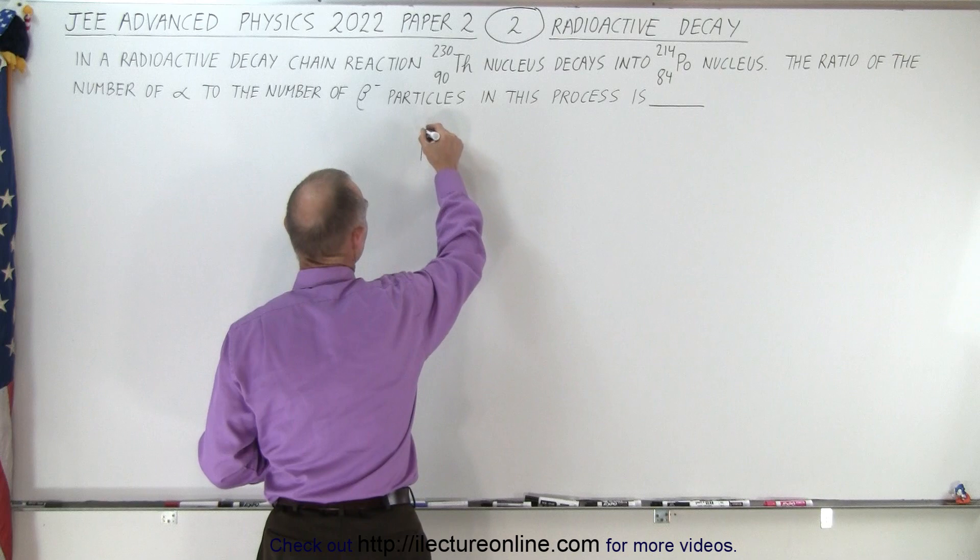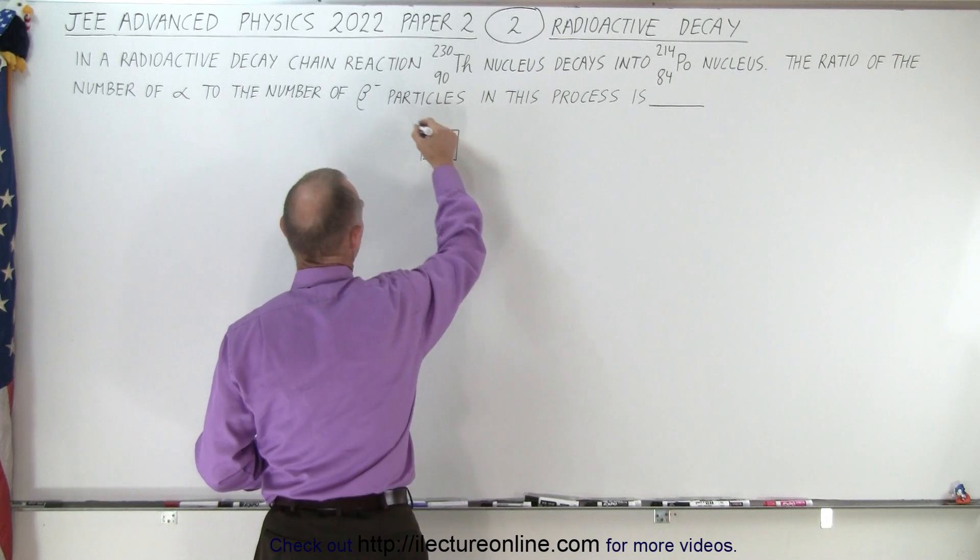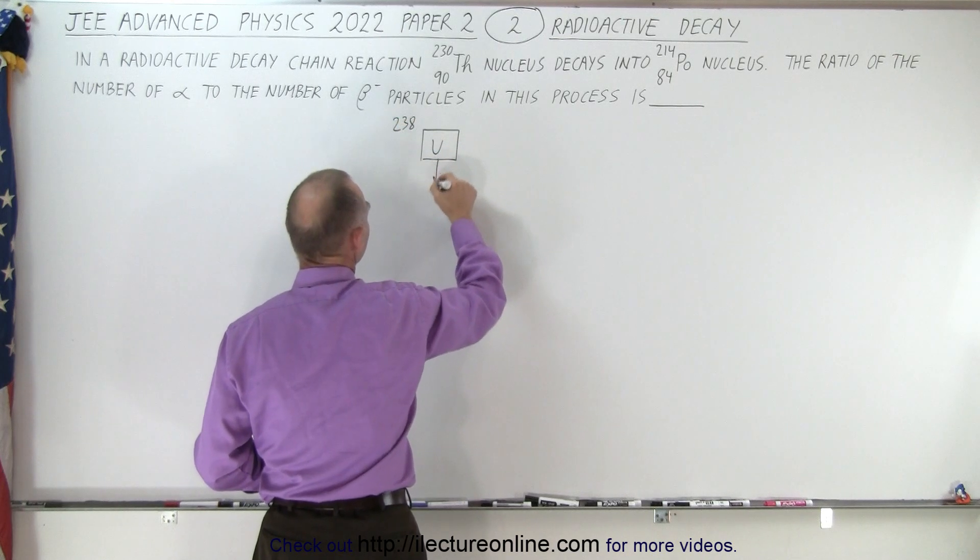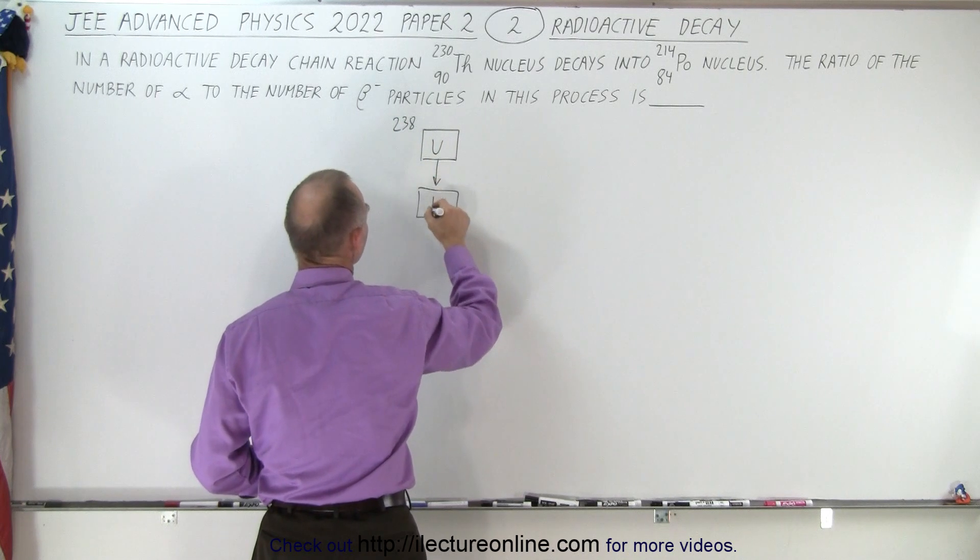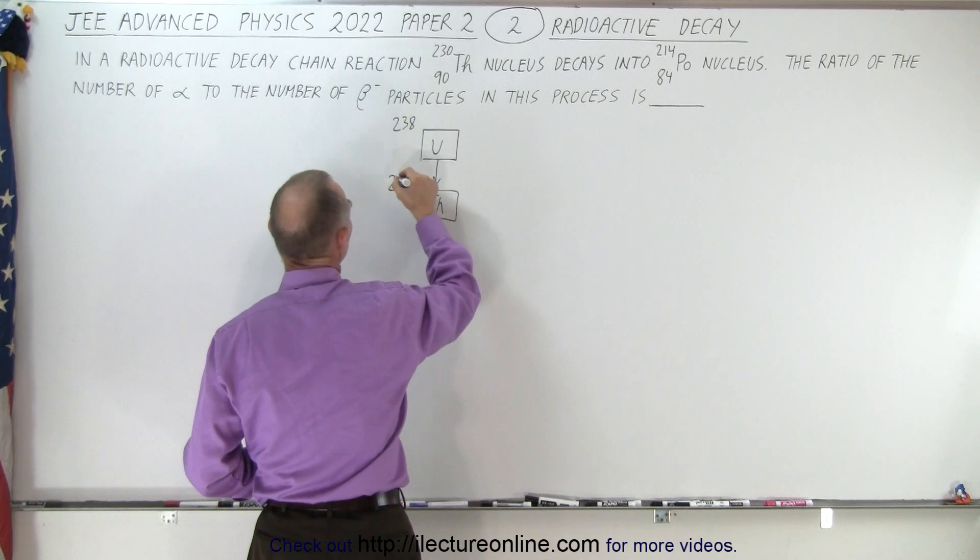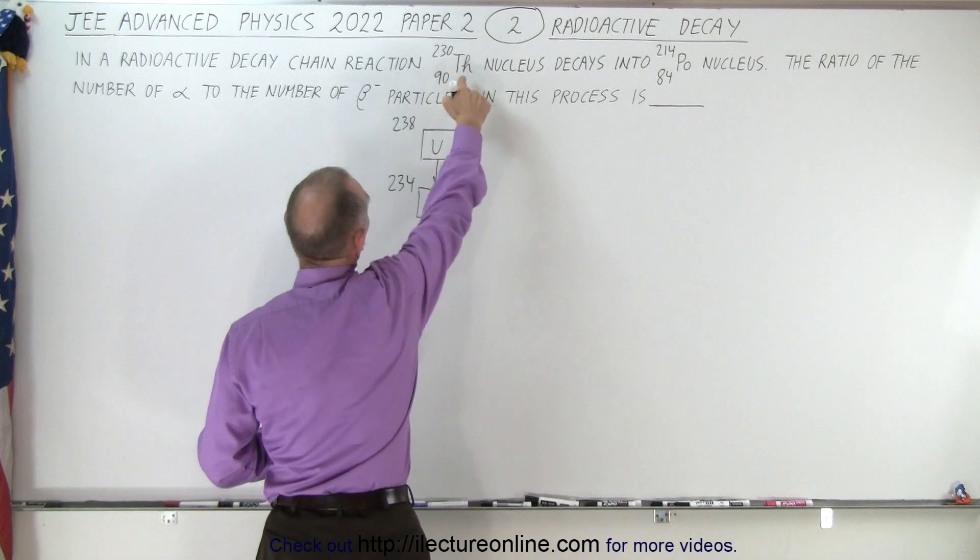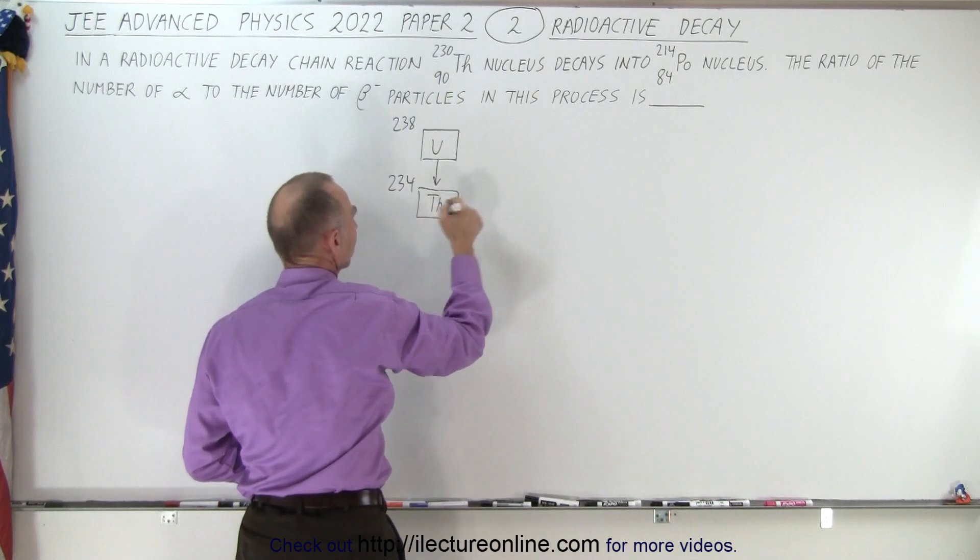Starting with uranium-238, there's an alpha decay down to thorium, and that thorium is 234. Now they want us to start from thorium-230, so that's not the place to start.